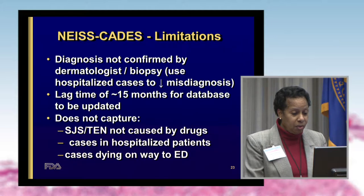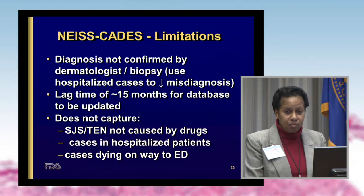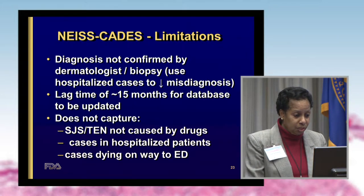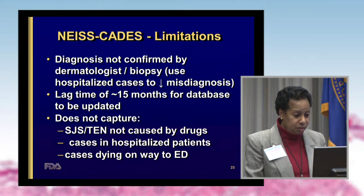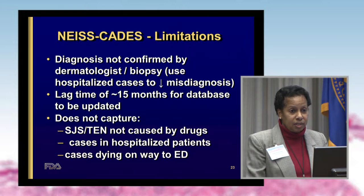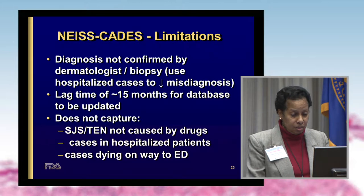The limitations of NEISS-CADES are that the diagnosis is not confirmed, and there is a lag time of approximately 15 months to two years for data from a given year to become available — for example, we just received the 2013 data. NEISS-CADES also does not capture all cases of SJS-TEN: it doesn't capture cases not caused by drugs, cases occurring in patients already hospitalized for something else, or cases that never made it to hospital.